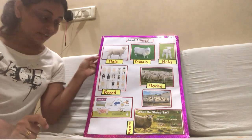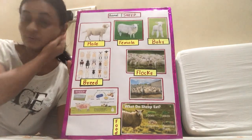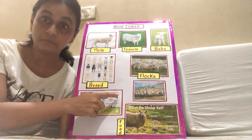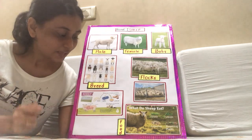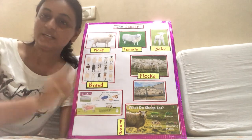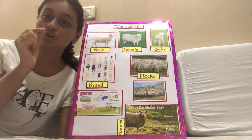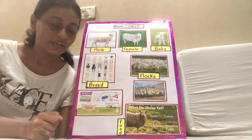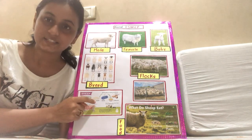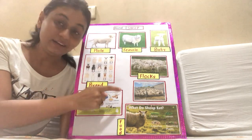Now children, let us see what all things we get from sheep. We get dairy products, we get meat, we get wool, and we get lanolin. Lanolin is a base used for ointment, and it is found on the wool of the sheep. So once again, what we get from sheep: dairy products, wool, lanolin and meat.